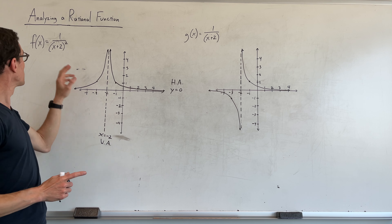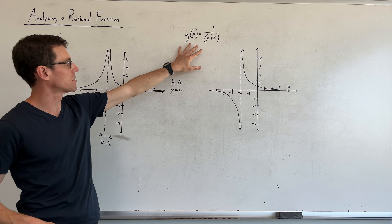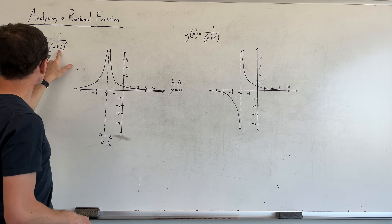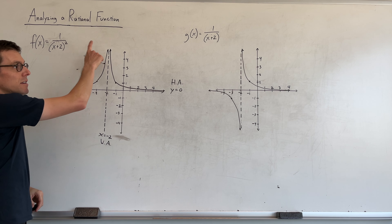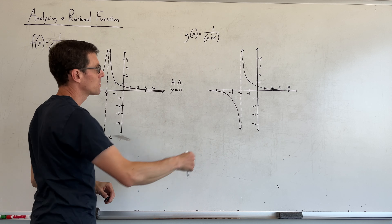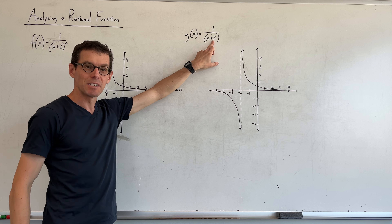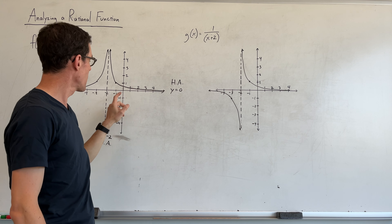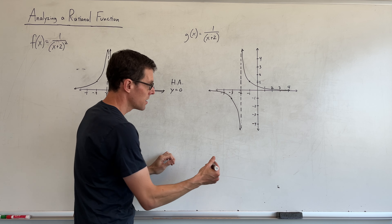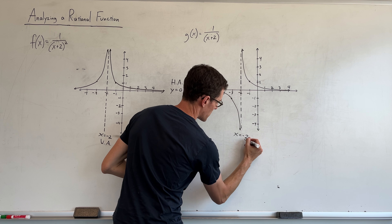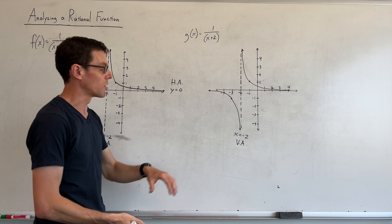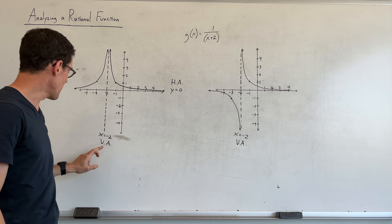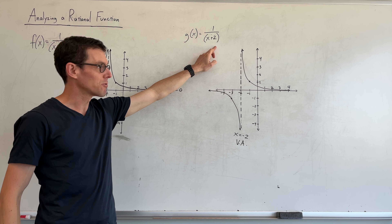Now I want to compare these two functions. This one has 1 over x plus 2, just like the other, but this one is not being squared. The domain of this function is the same as the domain of the other — x cannot be negative 2. So both graphs have the same vertical asymptote at x equals negative 2. That is tied, as always, to domain restrictions. Also, the degree on the top is implicitly 0 and the degree on the bottom is 1, so the relationship of n being smaller still locks in the horizontal asymptote at y equals 0.